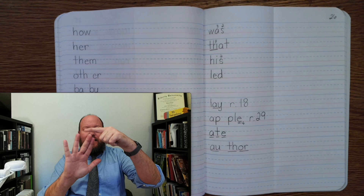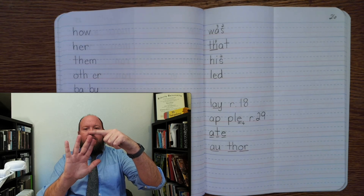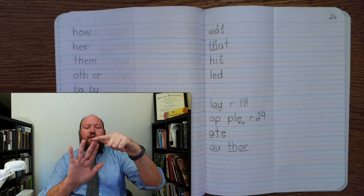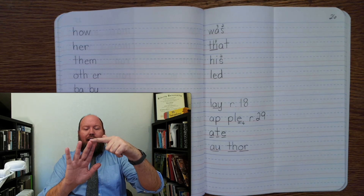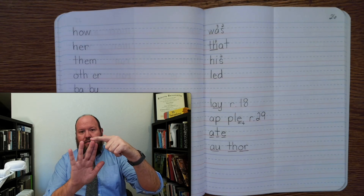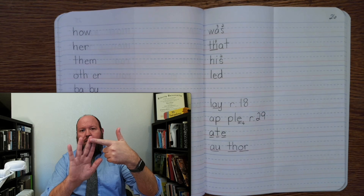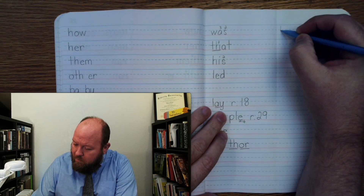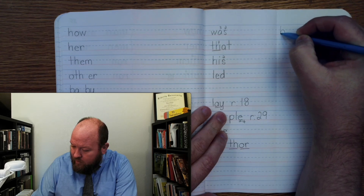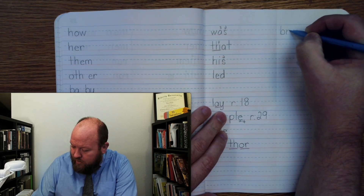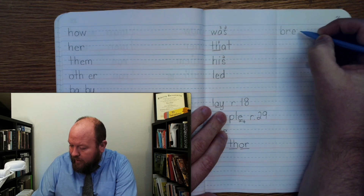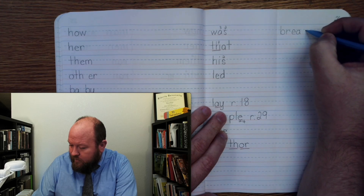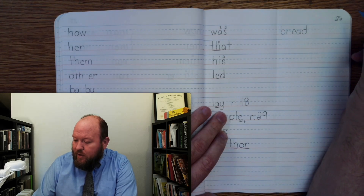Notice that this is a two-letter phonogram. We are going to use the EA phonogram — the EA one. Write the word bread. Buh-r-r-e-da. Bread.